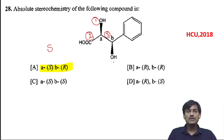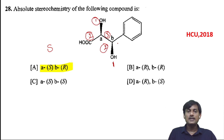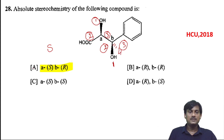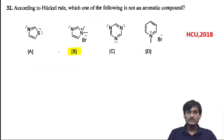For the second compound, the first priority is assigned, and on this side you have oxygen, but on the other side you have carbons, so this gets second priority and the other gets third priority. When you connect 1, 2, 3, you get clockwise direction, and hydrogen is below the plane, so you get R configuration. A is the correct option.